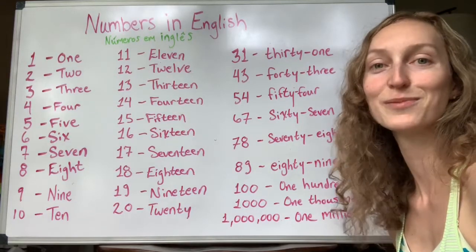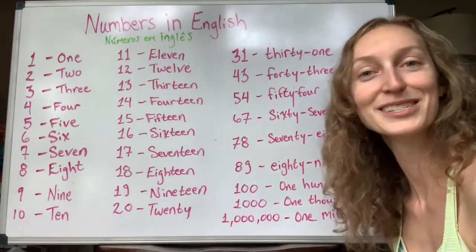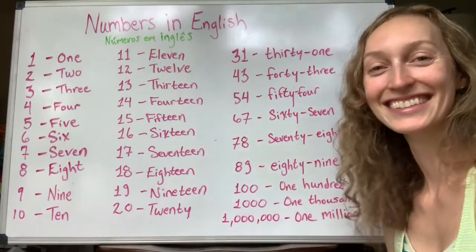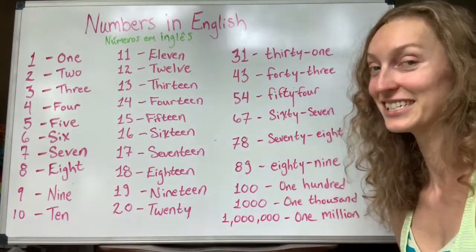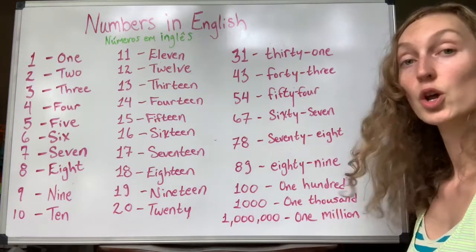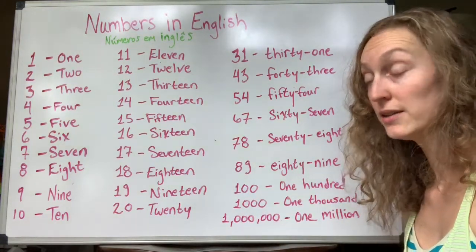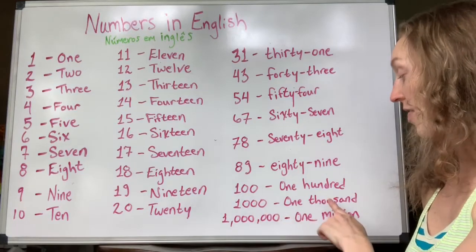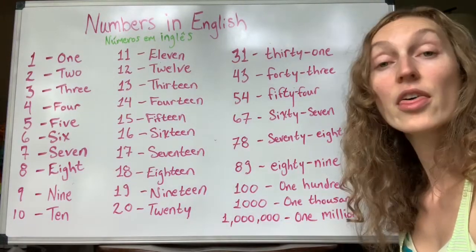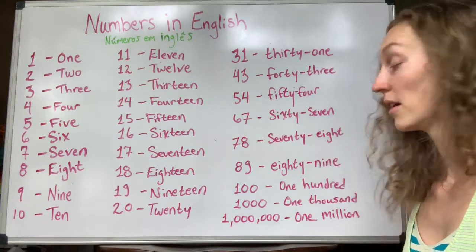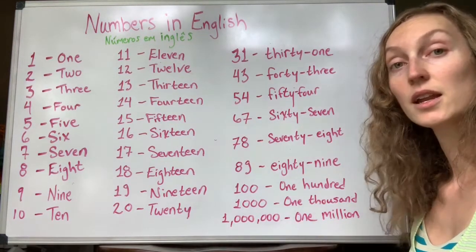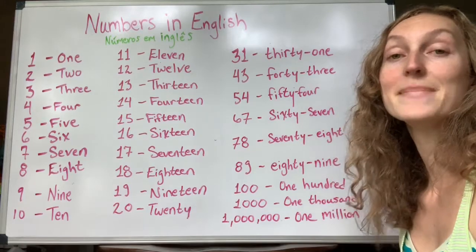A maioria dos americanos vai falar da mesma maneira que eu, né? Então, going forward, continuing: one hundred, one hundred. One thousand, one thousand. One million, one million.